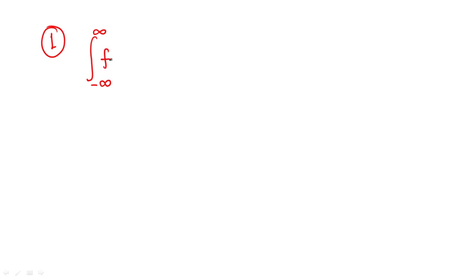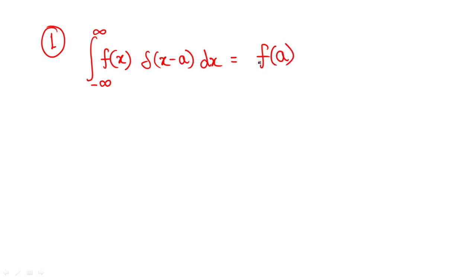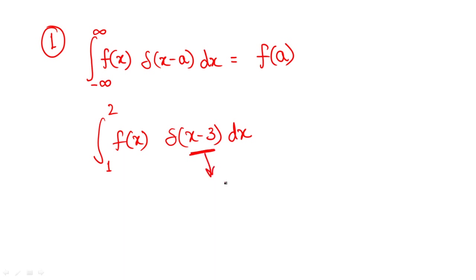The first property: if you have any integration with limits from minus infinity to plus infinity, and there is a function f(x) multiplied by delta(x minus a), where a is any constant, and you integrate with respect to dx, then the final answer of this integration will be f(a). However, if the limits are different — for example, from 1 to 2 — and you have f(x) times delta(x minus 3) dx, then you equate the bracket term to zero, giving x minus 3 equals zero, so x equals 3.